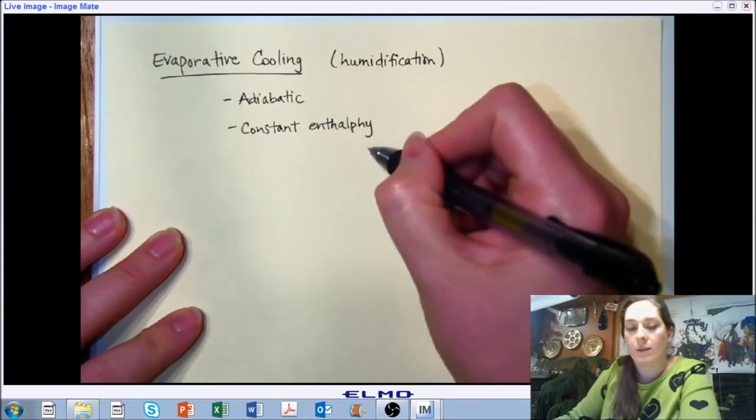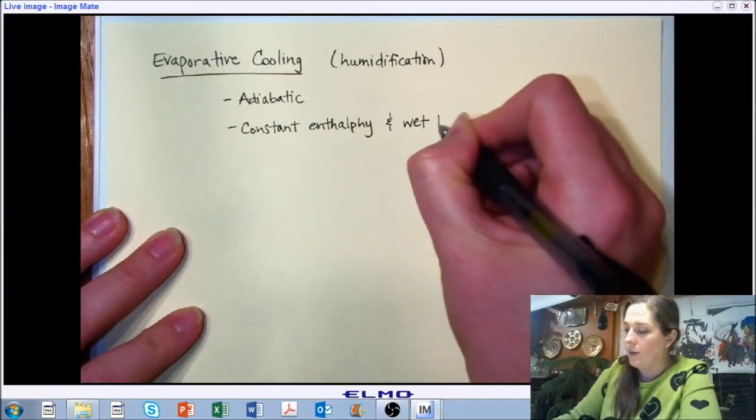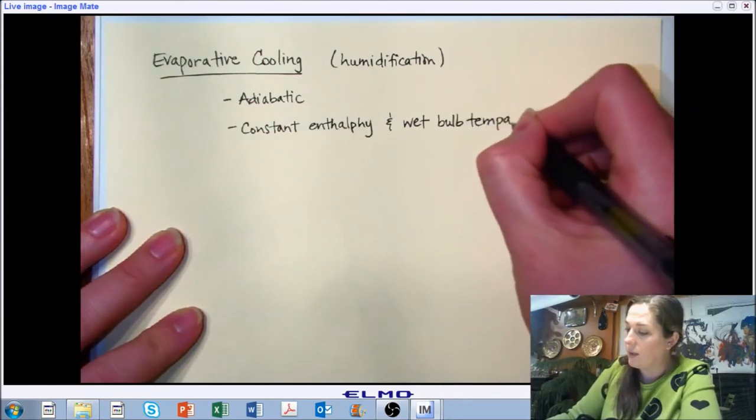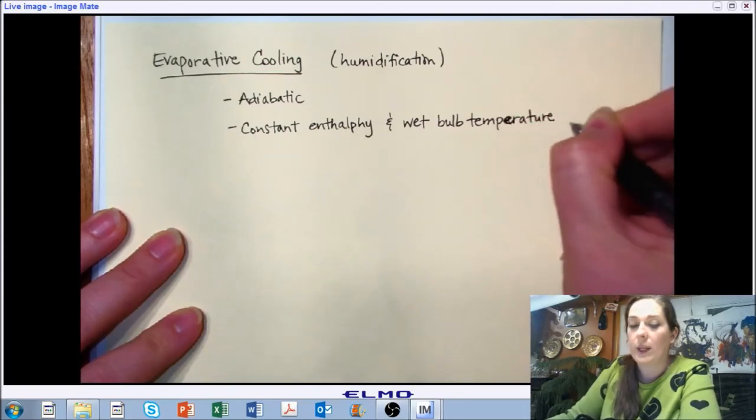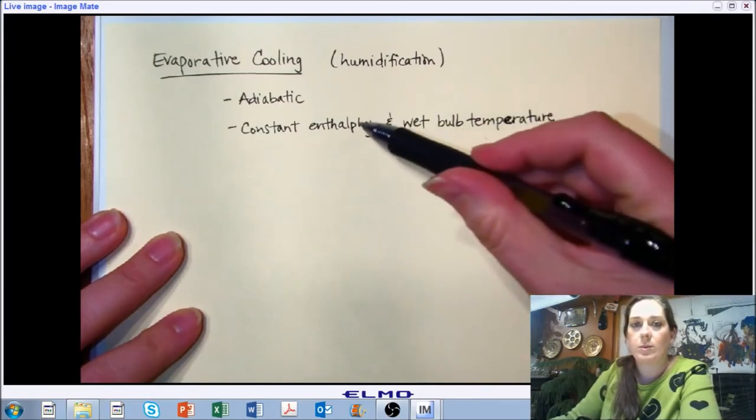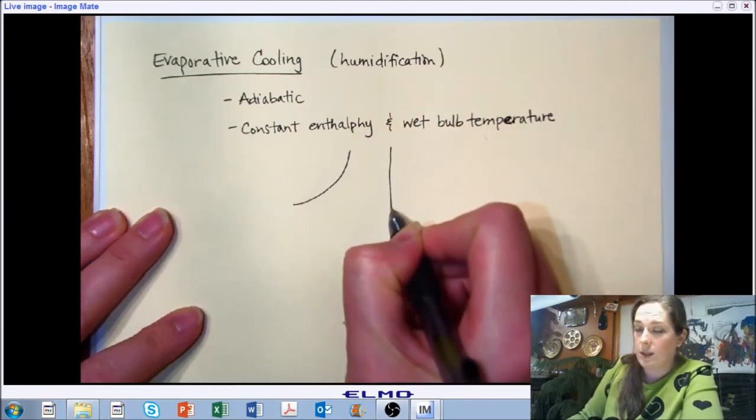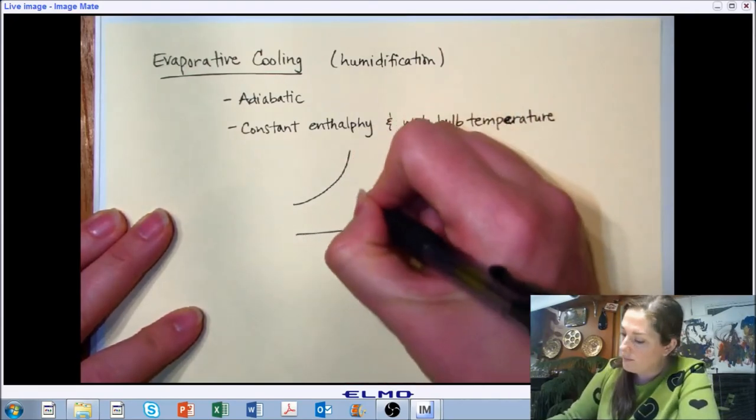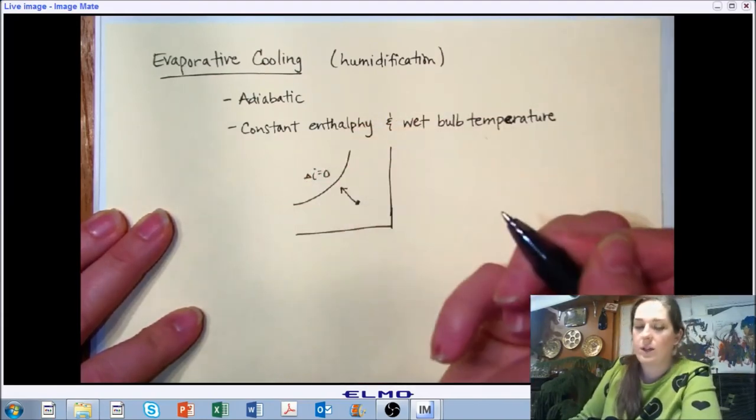In this case, we'll stay on a line of constant enthalpy. And while our wet bulb temperature and our enthalpy lines are not identical to one another, they're pretty close. And for all intents and purposes, when we do evaporative cooling, we're staying along a line of constant wet bulb temperature and a line of constant enthalpy. If you have to pick between the two, it's constant enthalpy. We don't have any change in enthalpy.